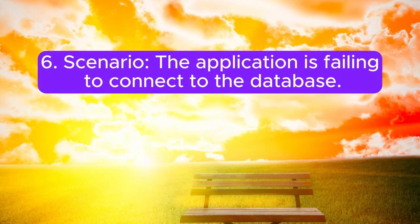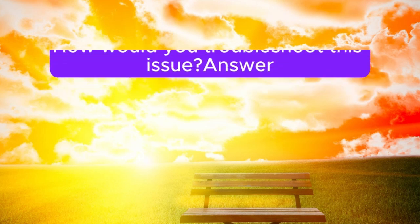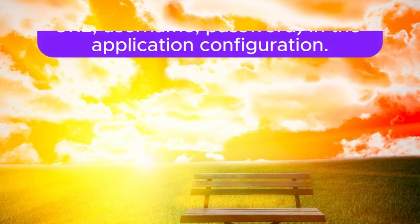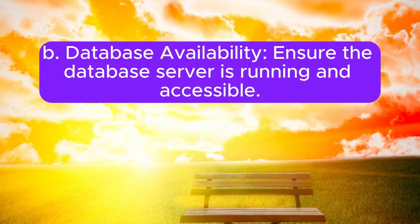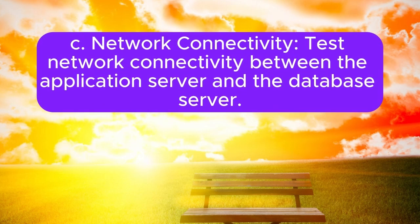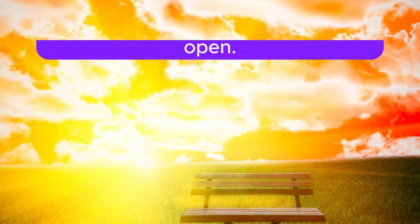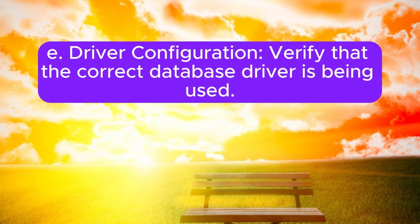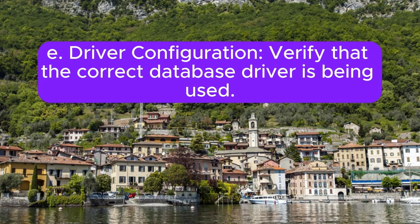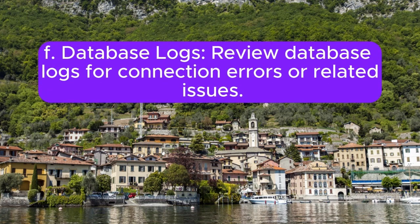Scenario 6: The application is failing to connect to the database. How would you troubleshoot this issue? Answer: A. Check connection settings — verify database connection settings like URL, username, and password in the application configuration. B. Database availability — ensure the database server is running and accessible. C. Network connectivity — test network connectivity between the application server and the database server. D. Firewall rules — check firewall rules and ensure necessary ports are open. E. Driver configuration — verify that the correct database driver is being used. F. Database logs — review database logs for connection errors or related issues.